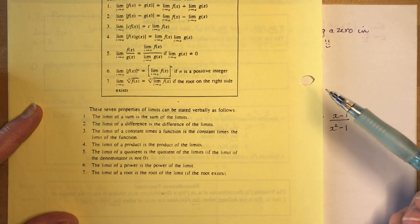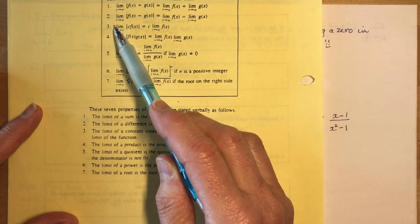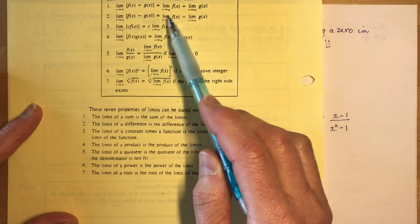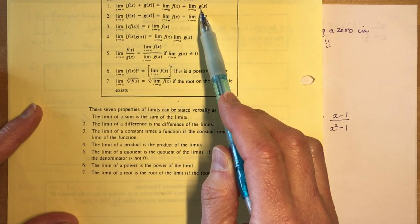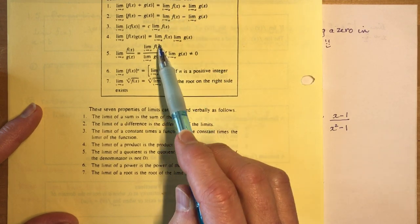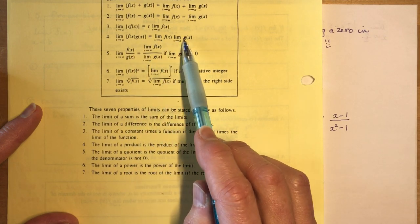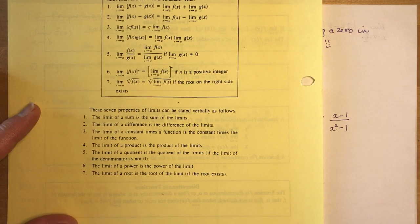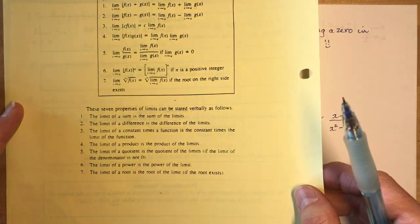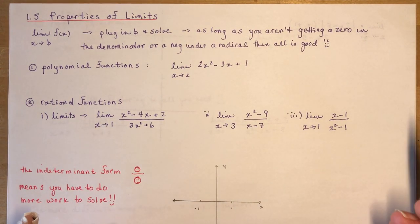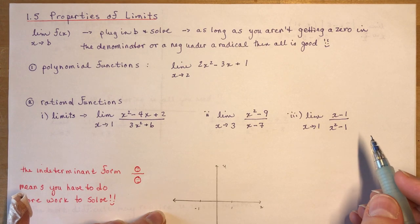All these properties are saying is that you can move the limit around to different parts — break it into little parts, put the limit in front of each of them if you want to. But normally you don't need to. Let's get into the mathematical calculations of limits.